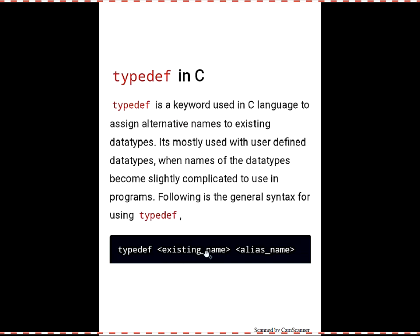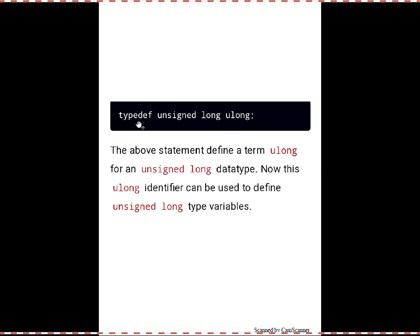The general syntax is: write the typedef keyword, then a space, then the existing data type name, then another space, and whatever name you want to give for that existing type. For example, you have typedef and an existing name called unsigned long. Since unsigned long is somewhat long to write in your programs, you can assign a simpler name to it — that is, ulong. The above statement defines the term ulong for your unsigned long data.